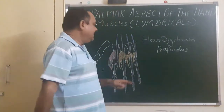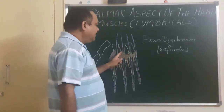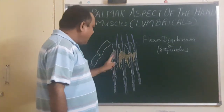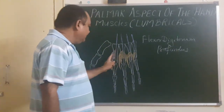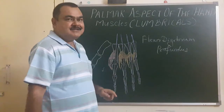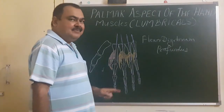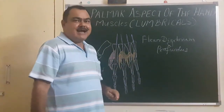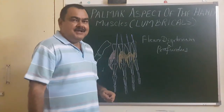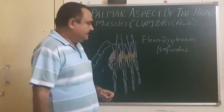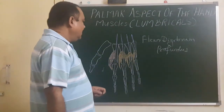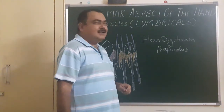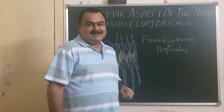Regarding nerve supply: the first and second lumbricals are supplied by the median nerve, and the third and fourth are supplied by the deep branch of the ulnar nerve. This concludes the discussion of the lumbricals.